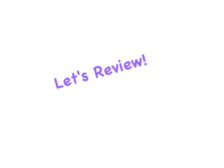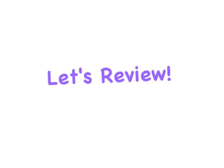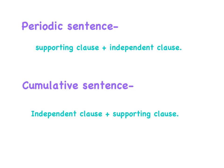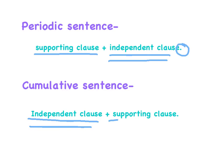Let's review! A periodic sentence starts with a supporting clause and ends with the independent clause next to the period. It's like a fishing pole — when you cast out, you're left in suspense until the very end. A cumulative sentence starts with the independent clause and then has a supporting clause. A cumulative sentence is like a squid: you have the main body, which is the independent clause, and then the tentacles, which are like the supporting clauses. Thanks for listening to my presentation. I hope you learned a bunch.